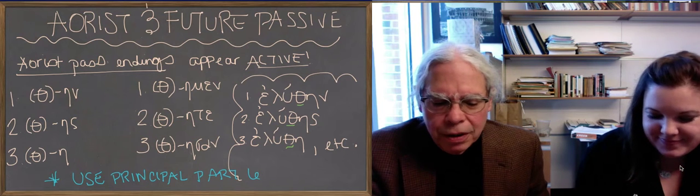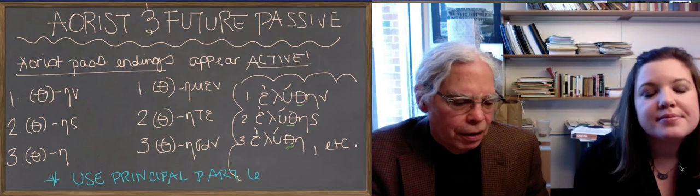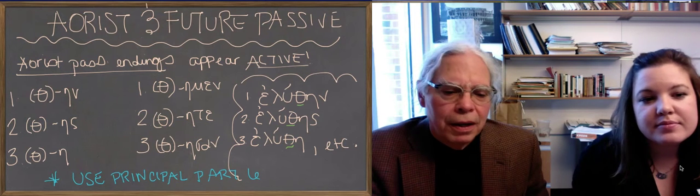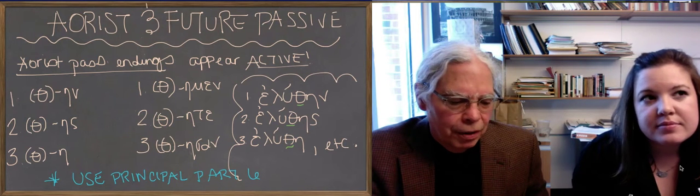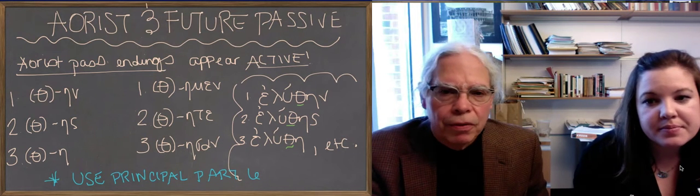So we've talked about the present and imperfect subjunctive, optative, and indicative in the passive voice.